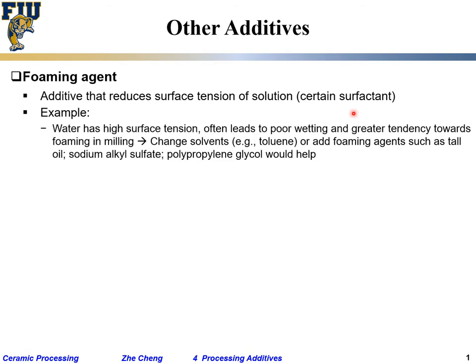These are the foaming agents — let me give you one example. Water typically has high surface tension compared with many other liquids. Organic solvents have high surface tension, which means water doesn't easily foam or bubble. This leads to poor wetting and a great tendency towards forming and melting issues.